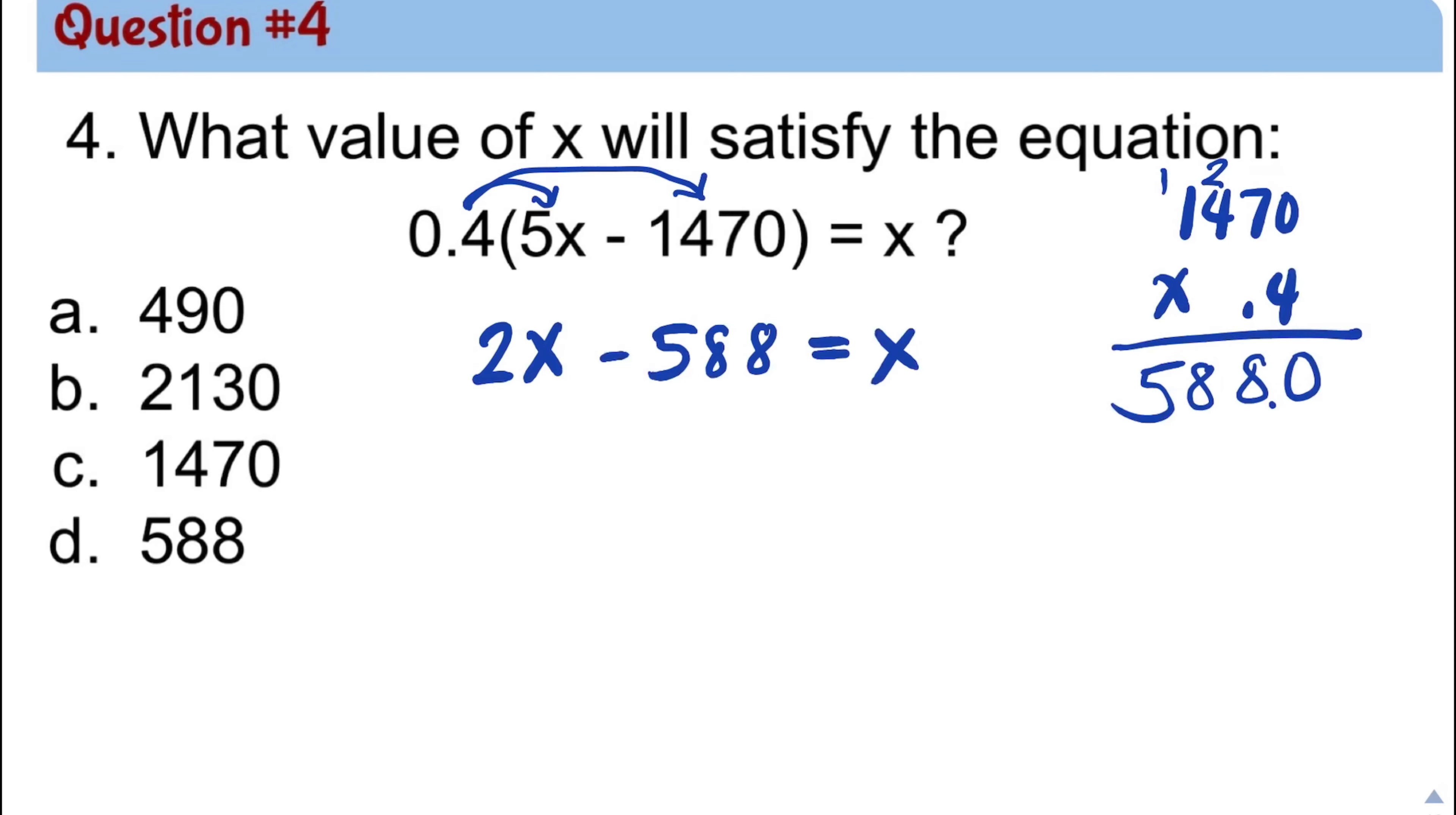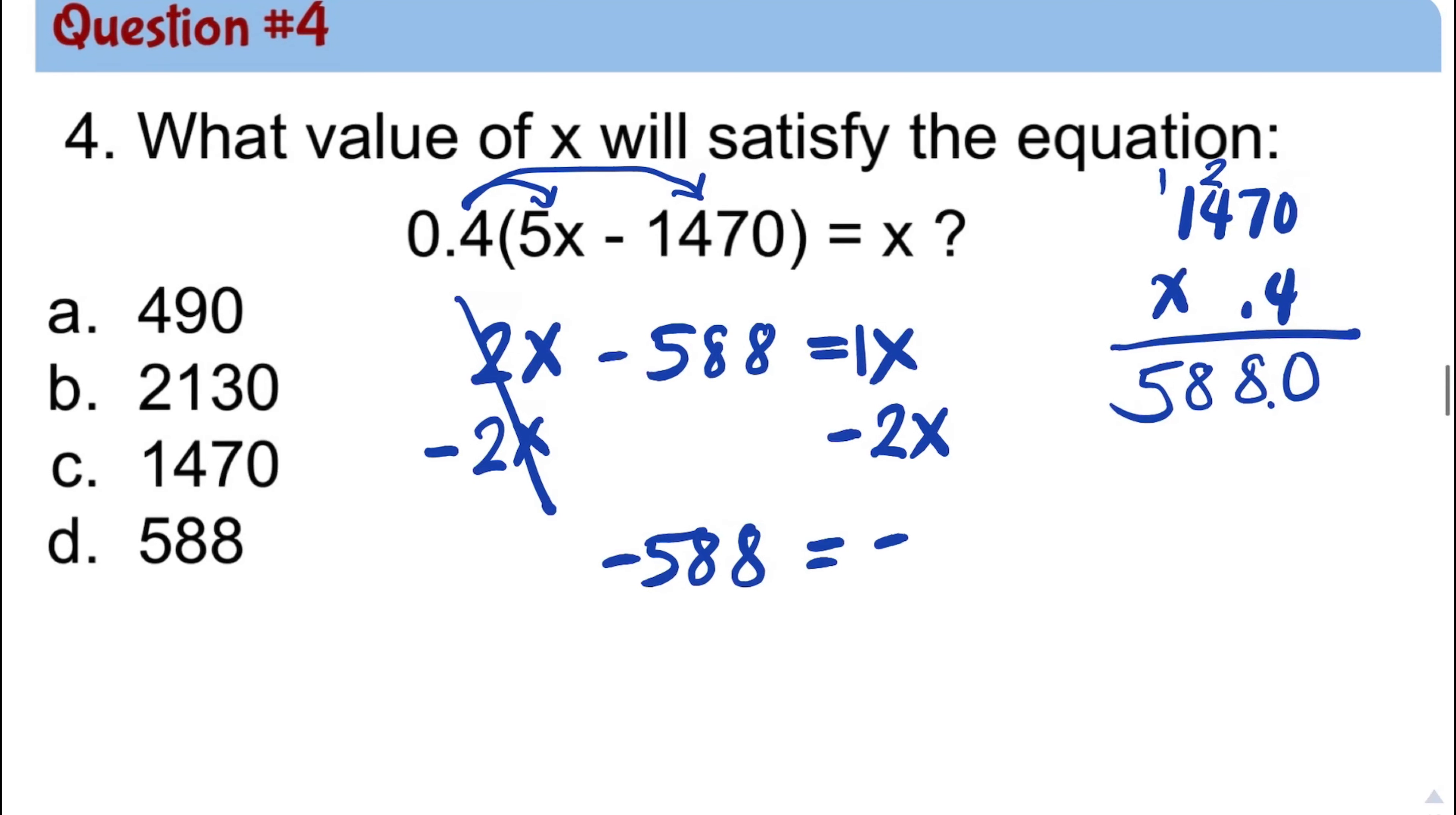So now we have 2x minus 588 is equal to x. Solving equations in one variable, we need to isolate the variable on one side. It doesn't matter whether you move it to the left or you move all the x to the right for as long as you're doing the inverse operation. 2x is positive, so the inverse will be minus 2x to both sides. So this will be cancelled. We now have negative 588 is equal to x minus 2x means 1x minus 2x, which is negative 1x. Now we need to divide both sides by negative 1. So x value is positive 588, which is letter D.